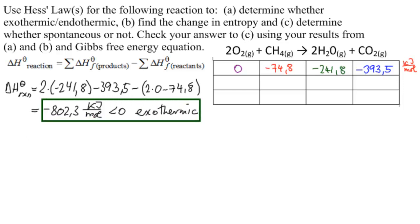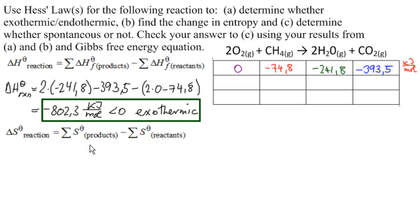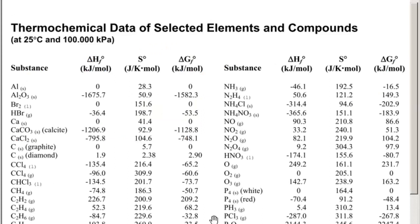Now we're going to use the entropy form of Hess's law. It says that the change in entropy at standard state of the reaction is the sum of the entropy at standard state of the products minus the sum of the entropy at standard state of the reactants. Do notice that there is no delta and no F here, and that is also true in the table.